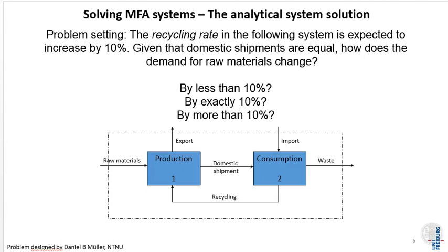To introduce our methods, we'll use an example created by Daniel Müller at NTNU. We have a very simple system with a production process and a consumption process. The given problem is: in the system you can see, the recycling rate is expected to increase by 10%. Given that domestic shipments remain equal, how does the material demand change if the recycling rate changes?